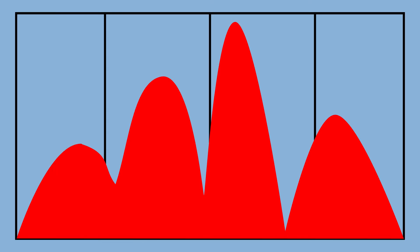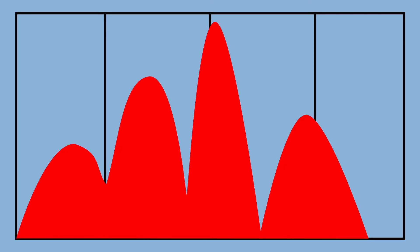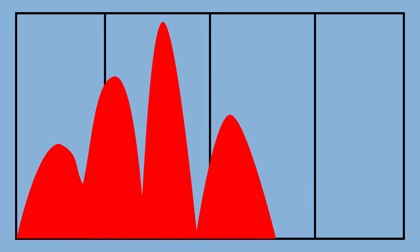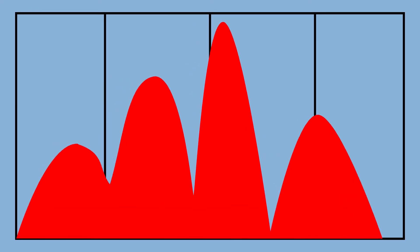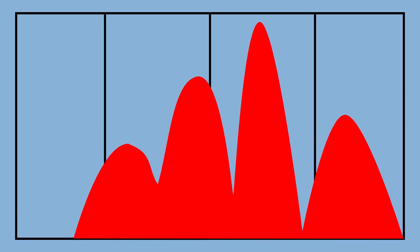So if you have a dark image, there will be a lot of information over here on the left of the histogram. If your image is brighter, there will be a lot more information over on the right hand side.